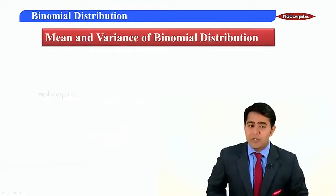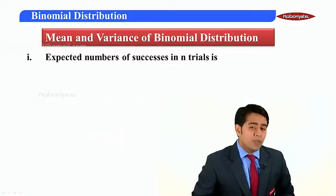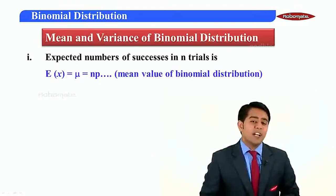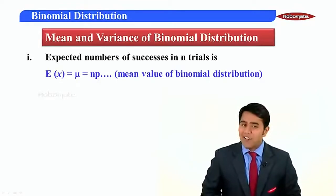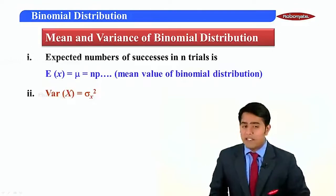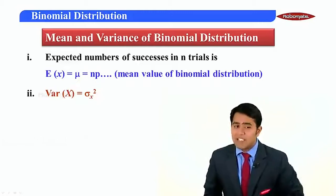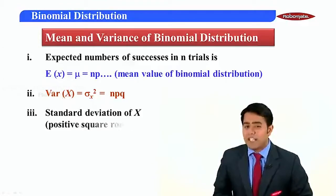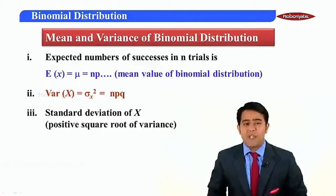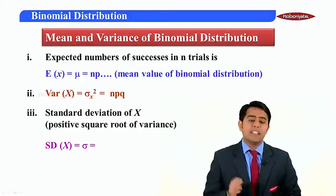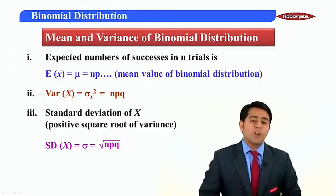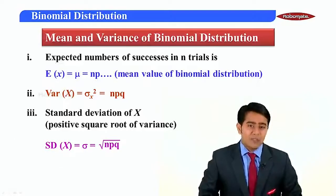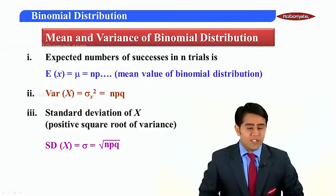Finally, for the mean and variance of binomial distribution: the mean, or expected number of successes in n trials, is given by n times p. The variance of X, denoted sigma squared, is given by n times p times q. The standard deviation of X is the positive square root of the variance, equal to the square root of npq. These are all the formulas and concepts required for this chapter. In the next module we will study problems based on this.